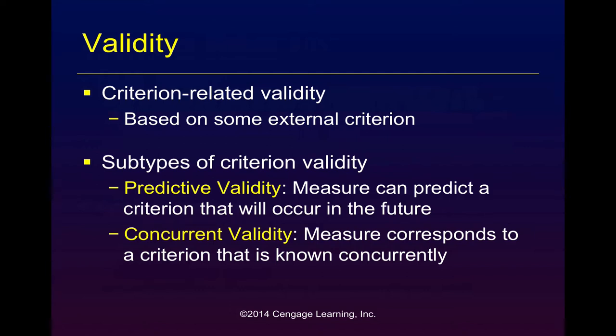Sometimes we develop research instruments that are able to predict future events, such as the SAT tests. These are not tests of intelligence — they are tests that predict success in college, nothing else. So if somebody has a higher SAT score than you and claims they are more intelligent, you can say that is only a test of likely success in college, not intelligence. Similarly, sometimes we use research instruments with concurrent validity. An example would be measures of activities of daily living compared to a nurse or occupational therapist rating of ability. If your self-administered ADL rating scale corresponded to the nurse or therapist rating scale, then we could say it is concurrently valid — and therefore administer that scale rather than requiring a home visit.